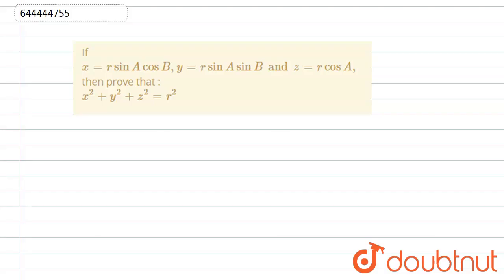Welcome to the Doubtnut channel. In this question, we will have to prove this equation: x² + y² + z² = r². We are given that x = r sin A cos B, y = r sin A sin B, and z = r cos A.